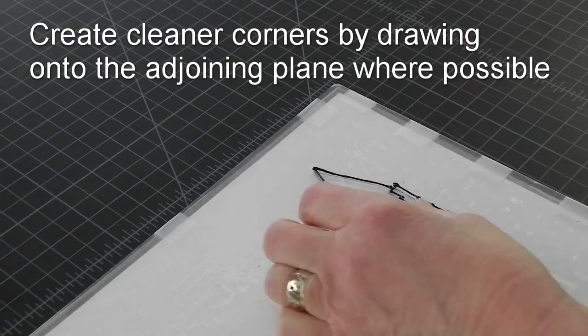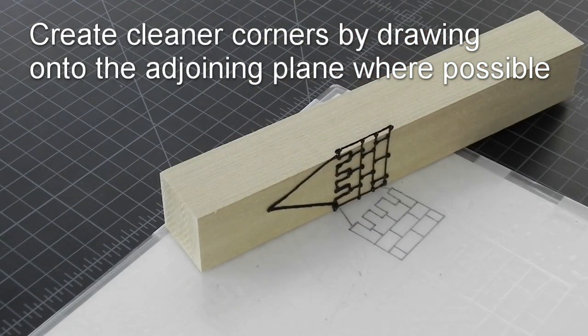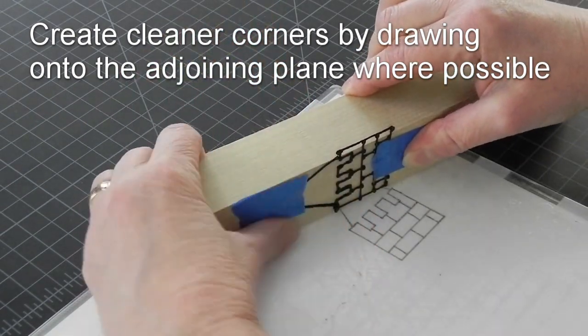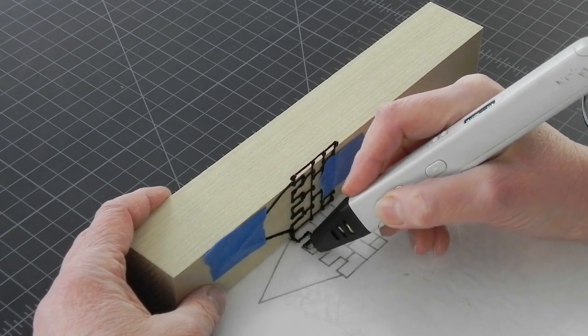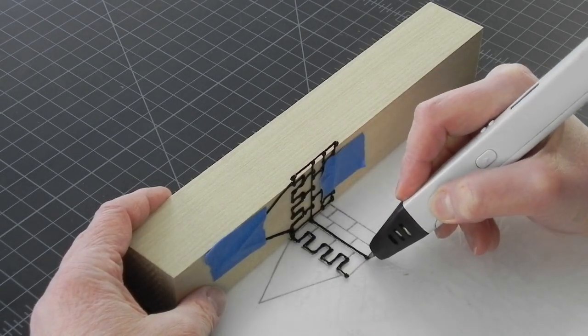Another way to make a corner is to stand one plane up and just continue drawing around the corner. You can't always do this, but when you can, it creates way cleaner corners.